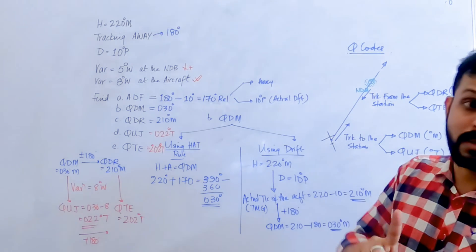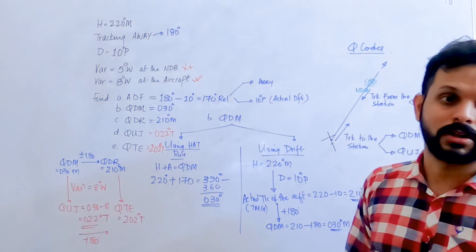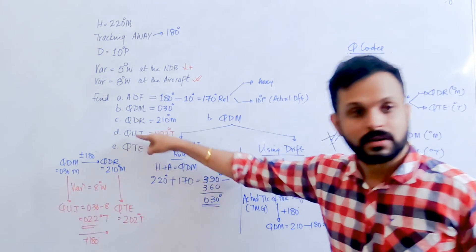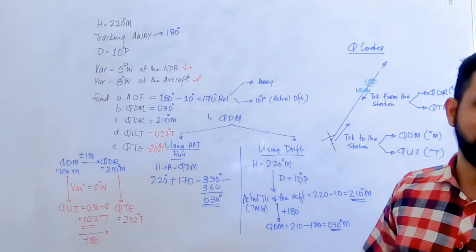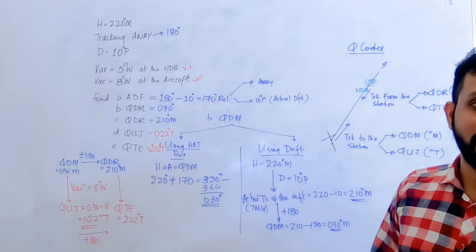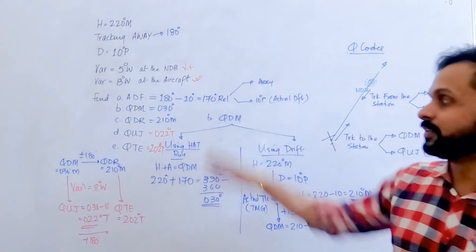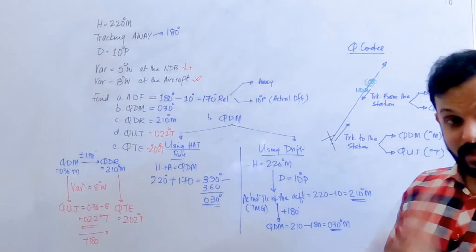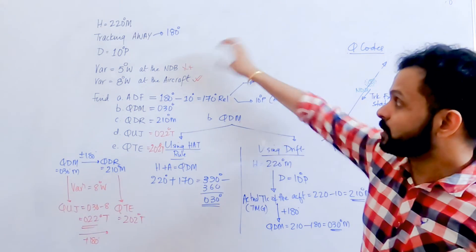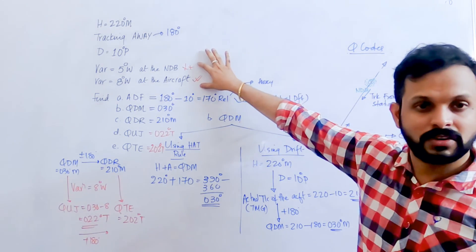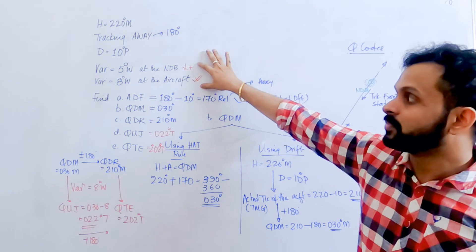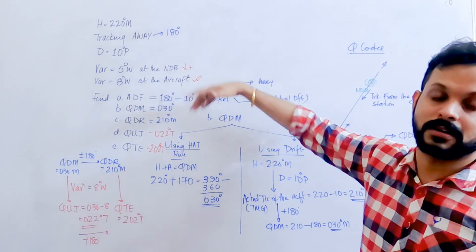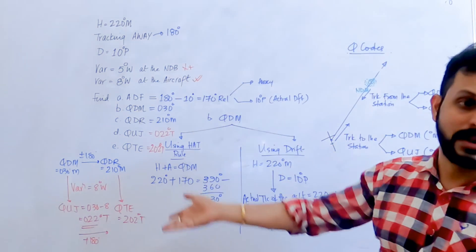Understanding Q-codes is critical. They'll likely ask you for only one value, but put all four options in the answers — so you need to correctly match the values to the codes or you'll get it wrong even if you calculated everything correctly.